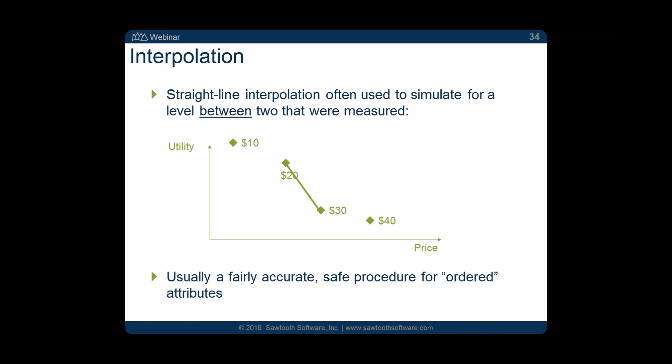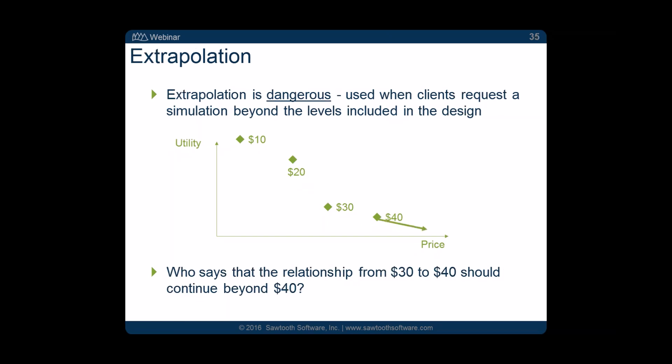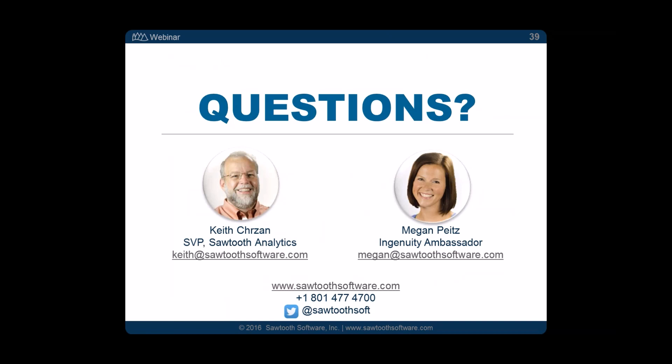Question: if you include interaction effects in your model, how does that impact the design of the simulator? If you've included them in your model, you want to build them into your simulator too. You'll have a utility for each interaction effect, and as long as your simulator tracks when that interaction applies, you add it in. It's just another additive effect: the total utility of a product is its main effect utilities plus those interaction utilities insofar as they apply.